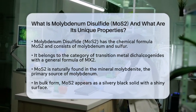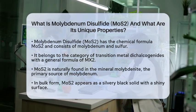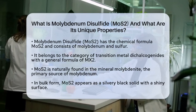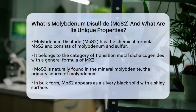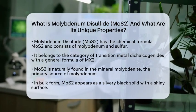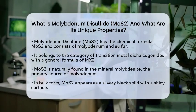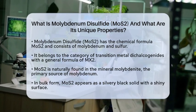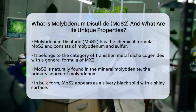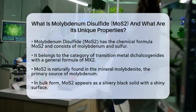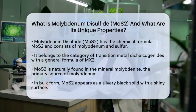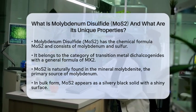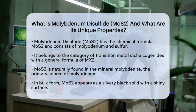Transition metal dichalcogenides have a general formula of MX2, where M represents a transition metal and X represents a chalcogen. MoS2 is naturally found in the mineral molybdenite, which is the main source of molybdenum. In its bulk form, molybdenum disulfide appears as a silvery black solid with a shiny surface. It is known for being relatively unreactive, meaning it does not easily react with dilute acids or oxygen.